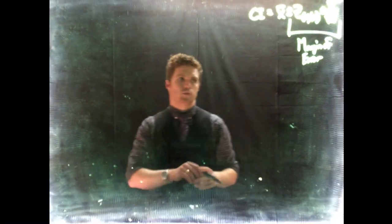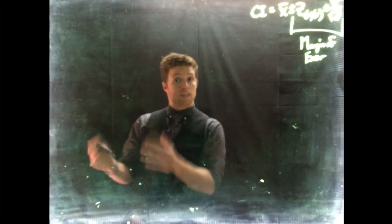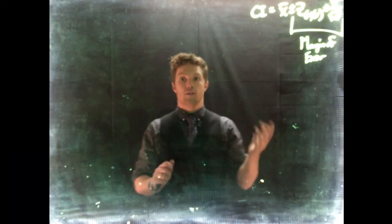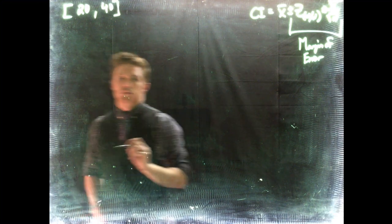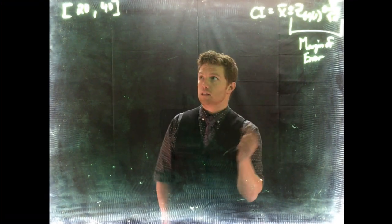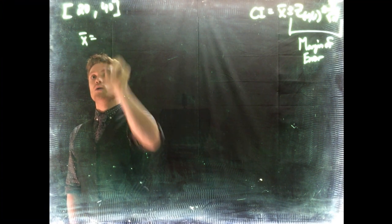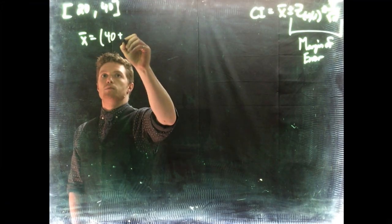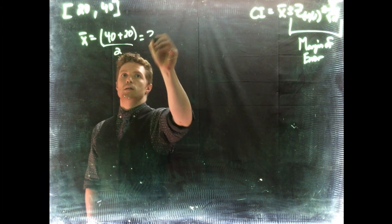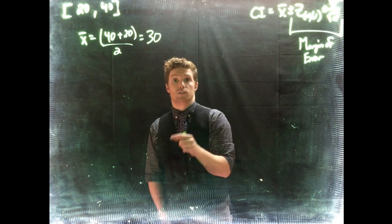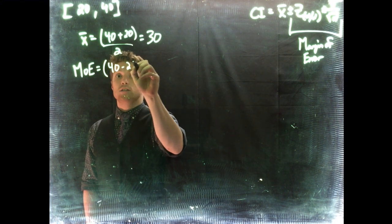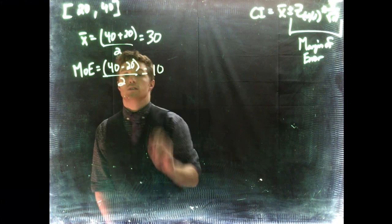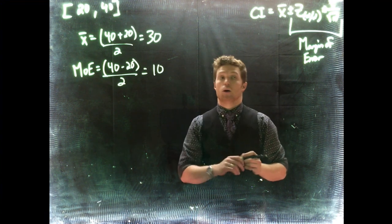Sometimes referred to just as our error, sometimes as MOE or just E. If we're just given the confidence interval, we can actually figure out what our margin of error is and what the sample mean is. For example, let's say we were given a confidence interval of (20, 40). I can immediately tell you what the sample mean was—the x-bar equals (40+20)/2, which gives me 30. I can also tell you the margin of error is (40-20)/2, which equals 10.